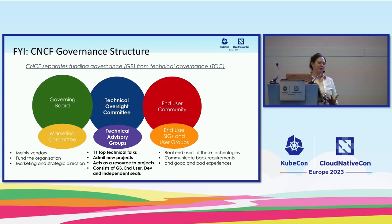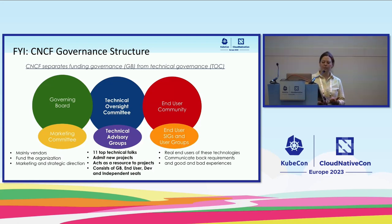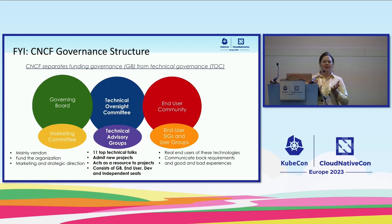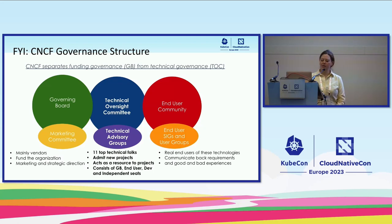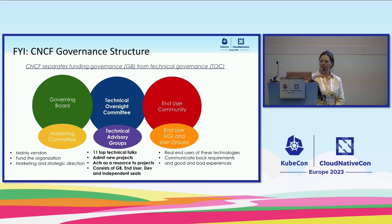We have three different areas within the Cloud Native Computing Foundation. We've got a governing board that has a marketing committee underneath. The Technical Oversight Committee really oversees projects and focuses on building out technical advisory groups. They help admit new projects, help move projects around levels, and sometimes work with other initiatives within CNCF. People are elected from governing board and user and developer communities.